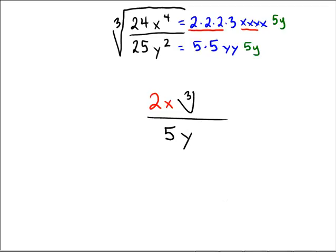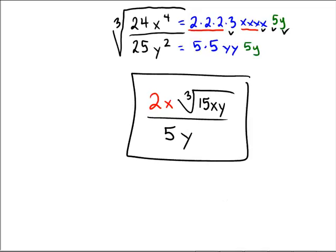Then we still have the cube root prison, which is going to contain the 3 and the 5 for 15, one last copy of x plus the y that we introduced, so there's an x, y. And so there's the final answer, 2x cube root 15xy over 5y.